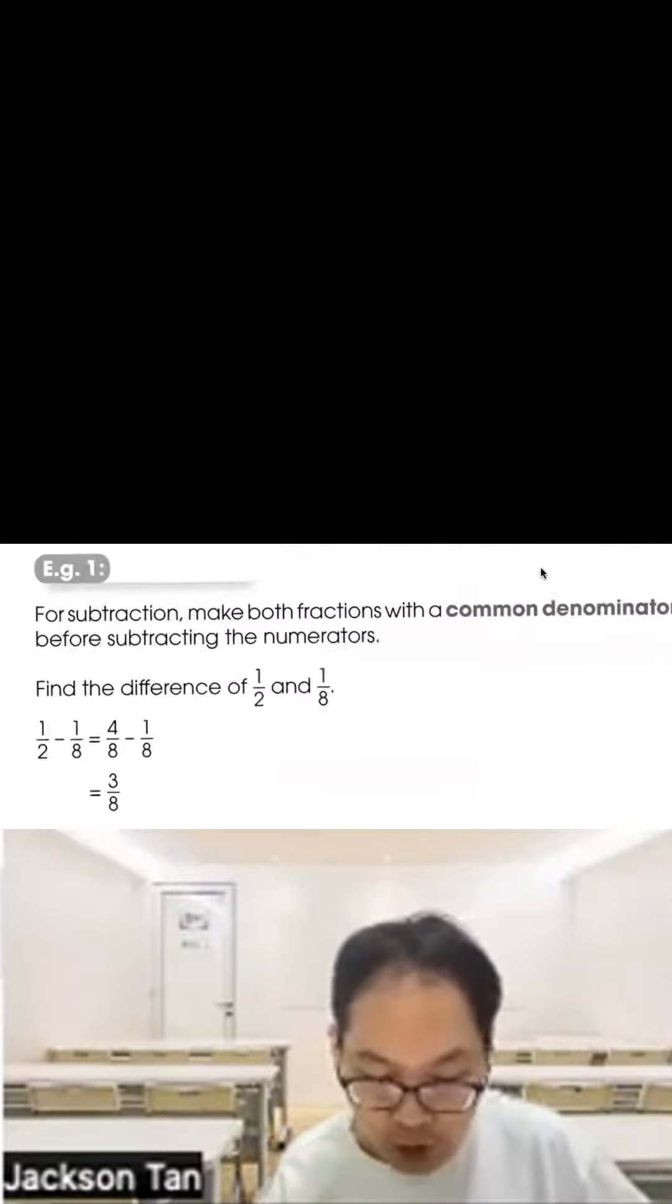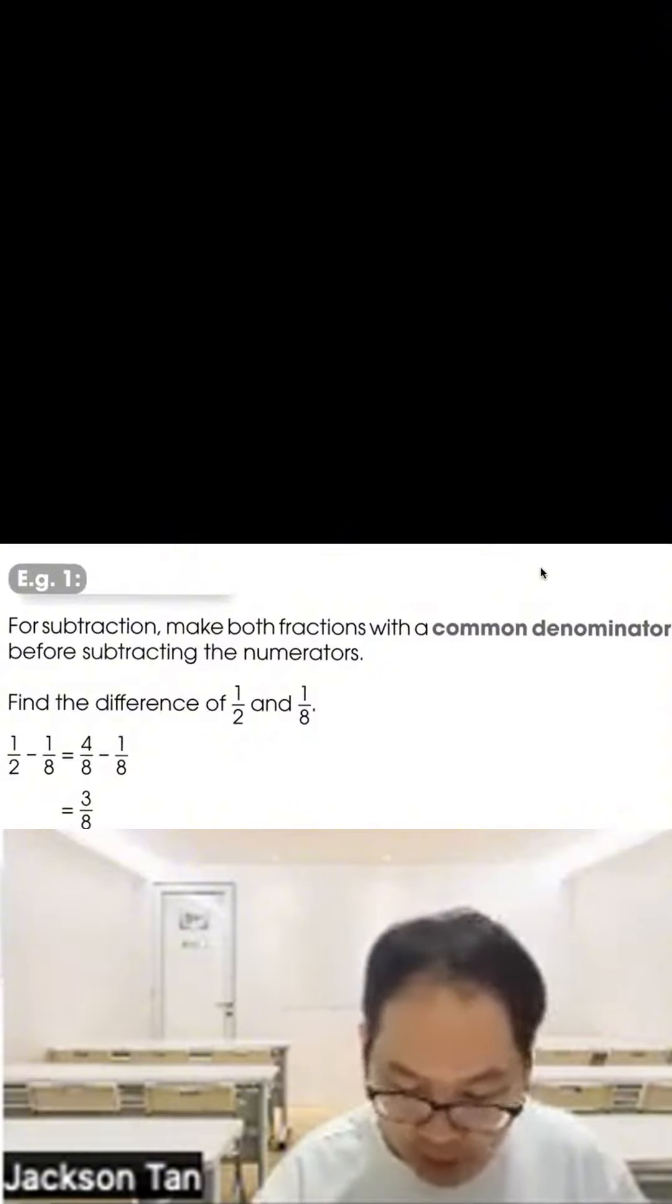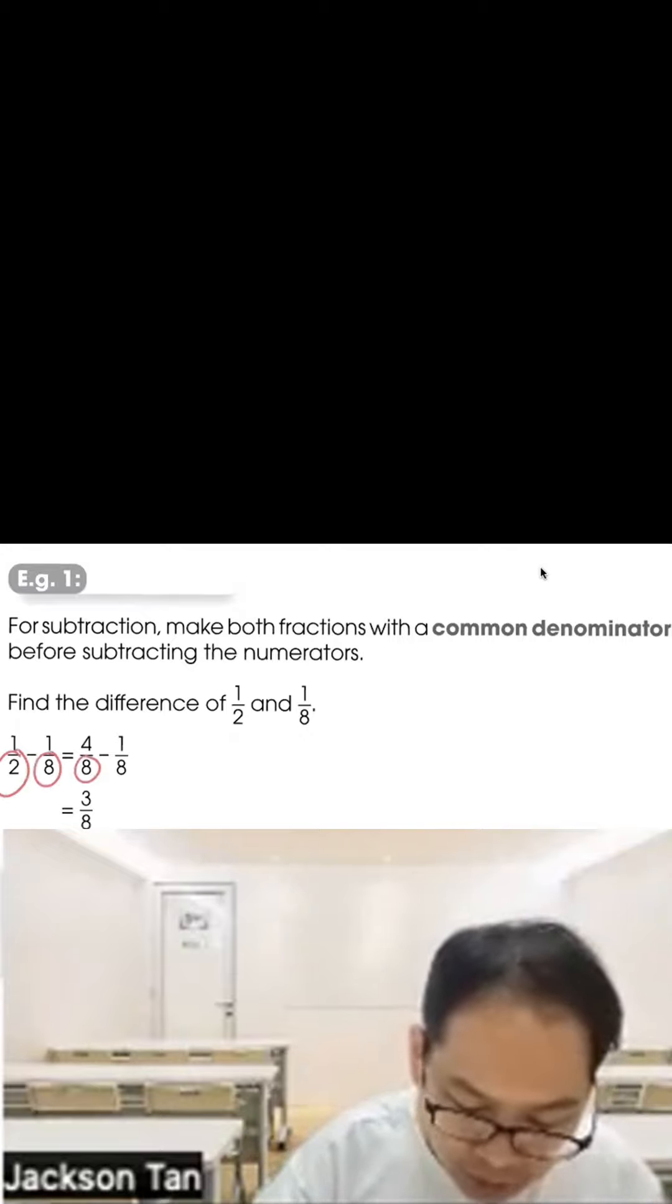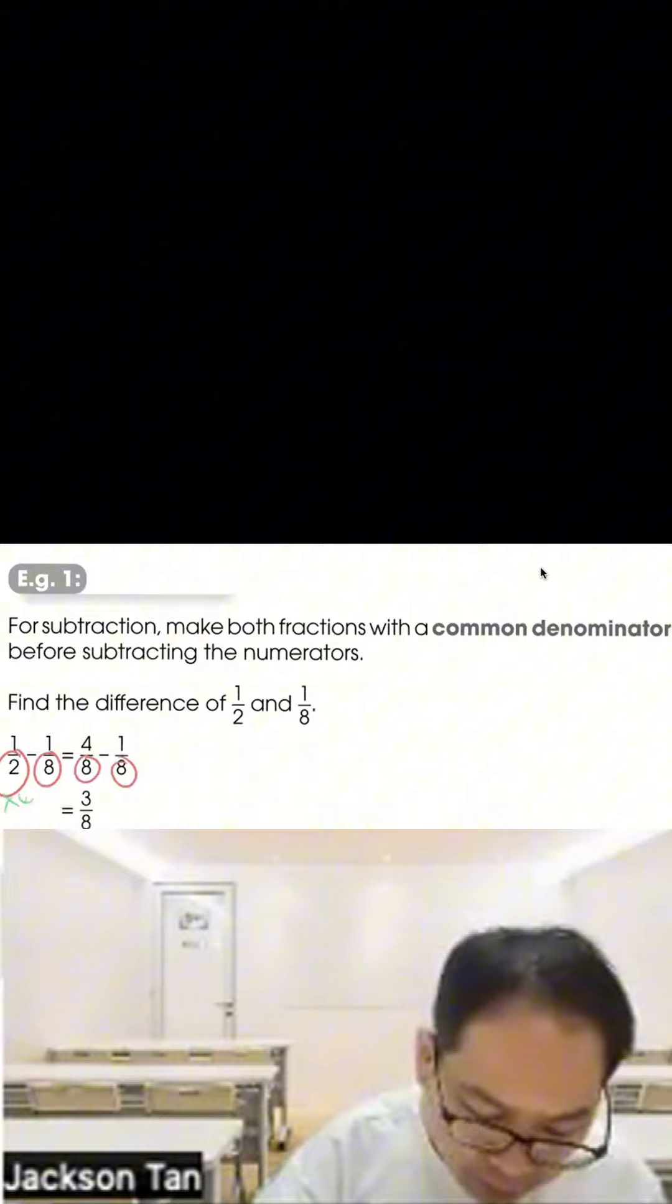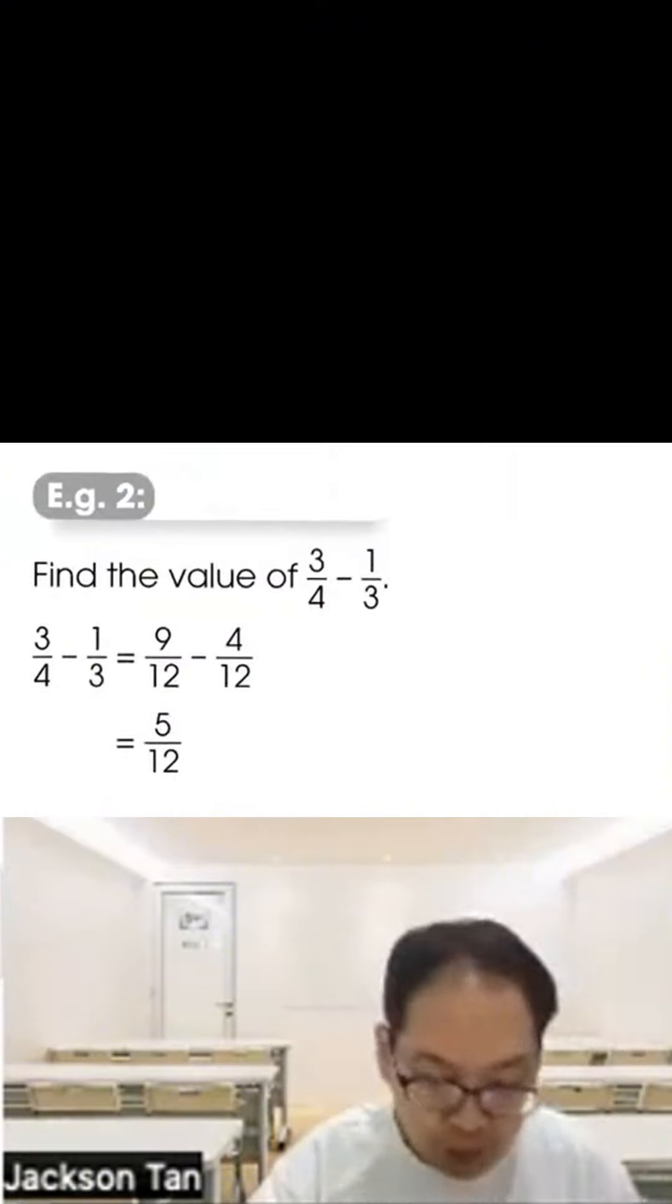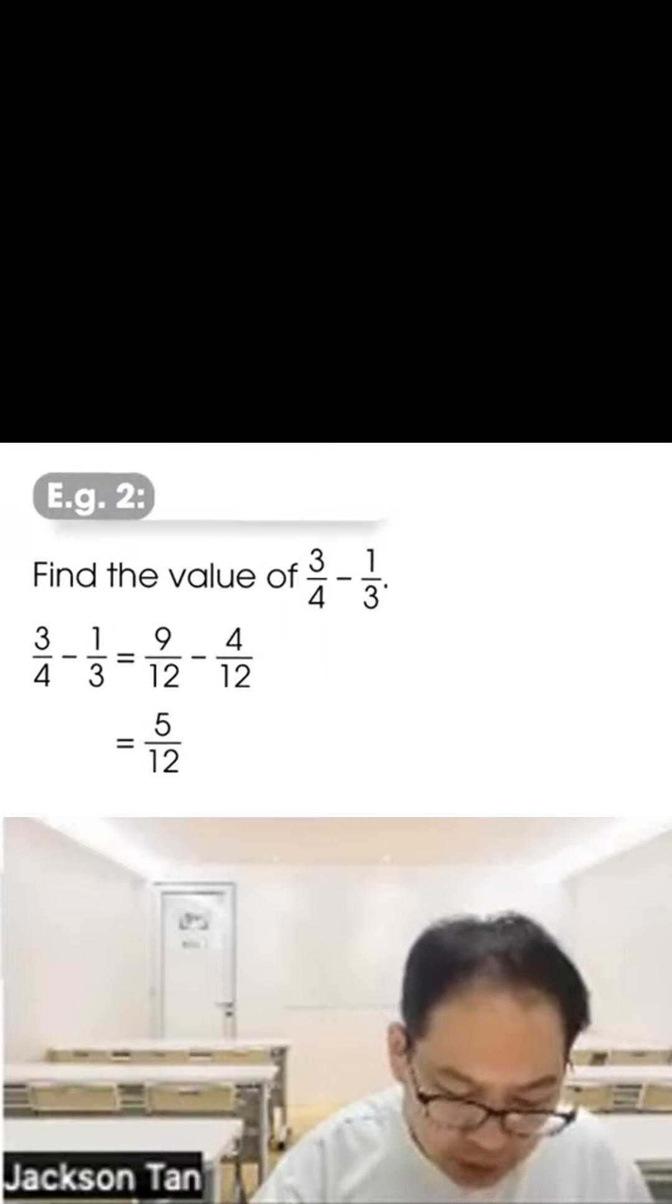For subtraction, make both fractions with a common denominator before subtracting the numerator. Find the difference means minus. So numerator, denominator, common. Two and eight, common would be eight. How? Basically here just times four to get eight, so here must times four. Two times four equals eight. Four minus one gives you three. Answer: three eighths.